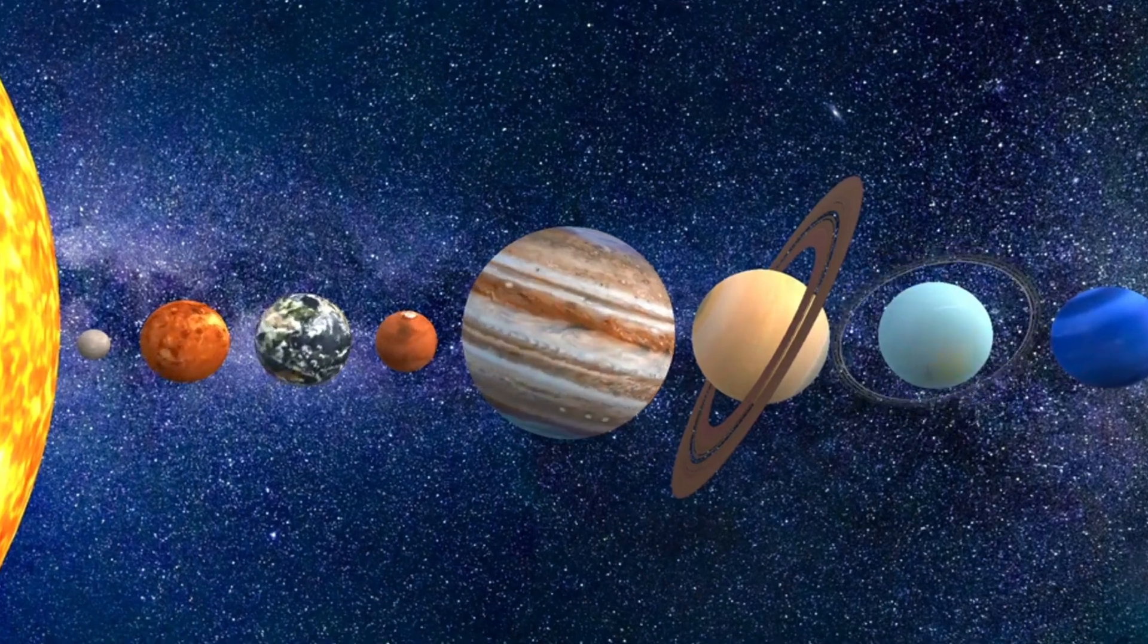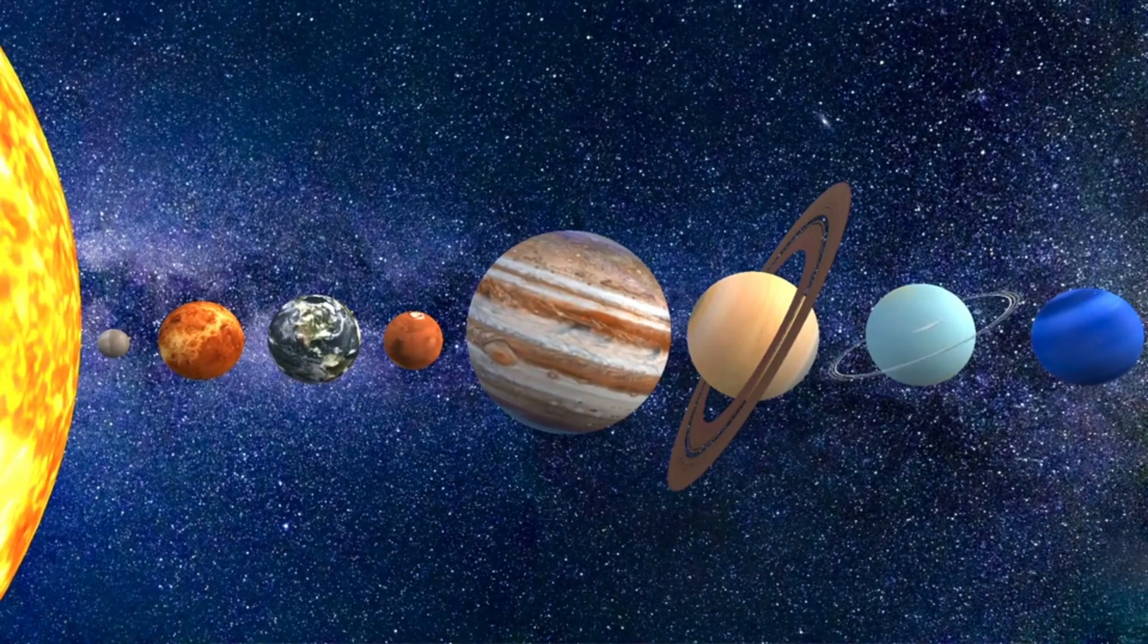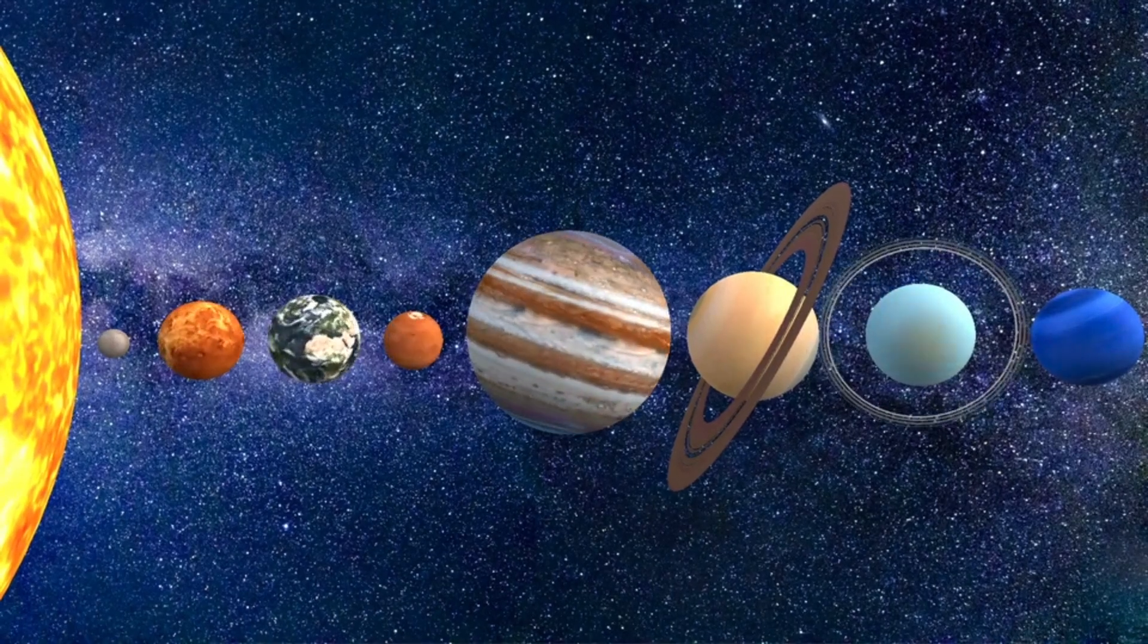Earth is sometimes called the Goldilocks planet because it's just the right distance from the sun, not too hot and not too cold, just perfect for life to thrive.